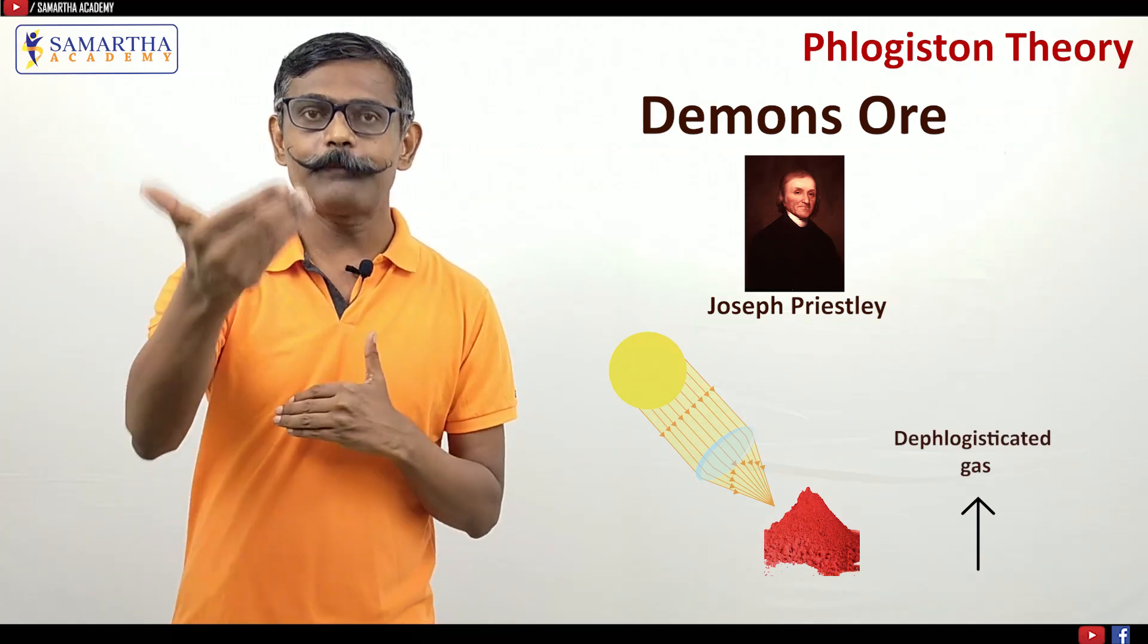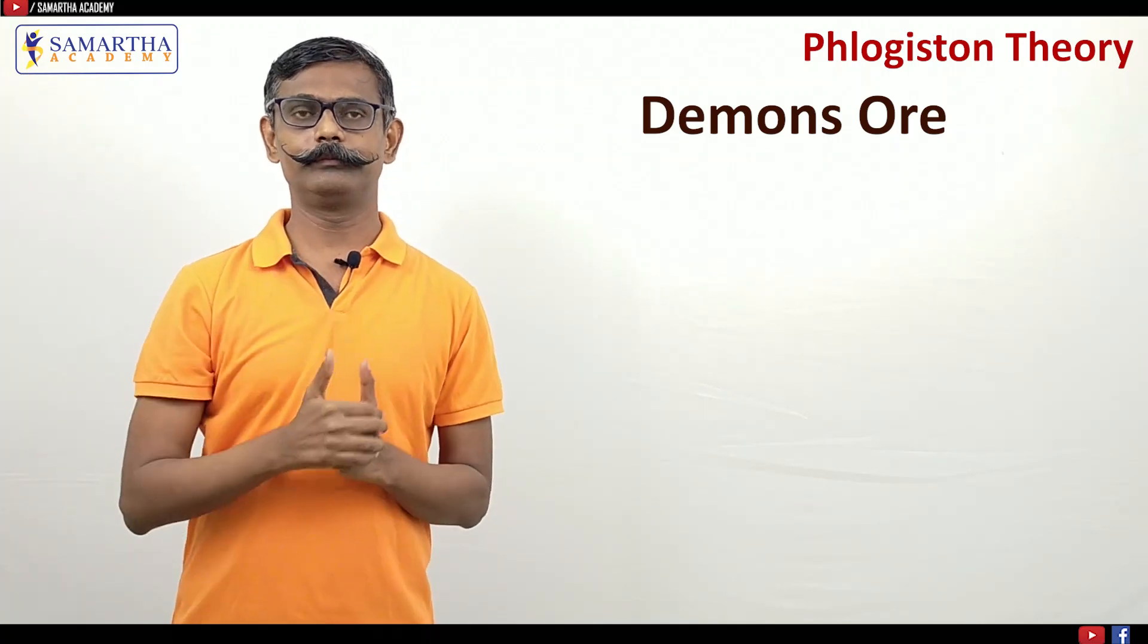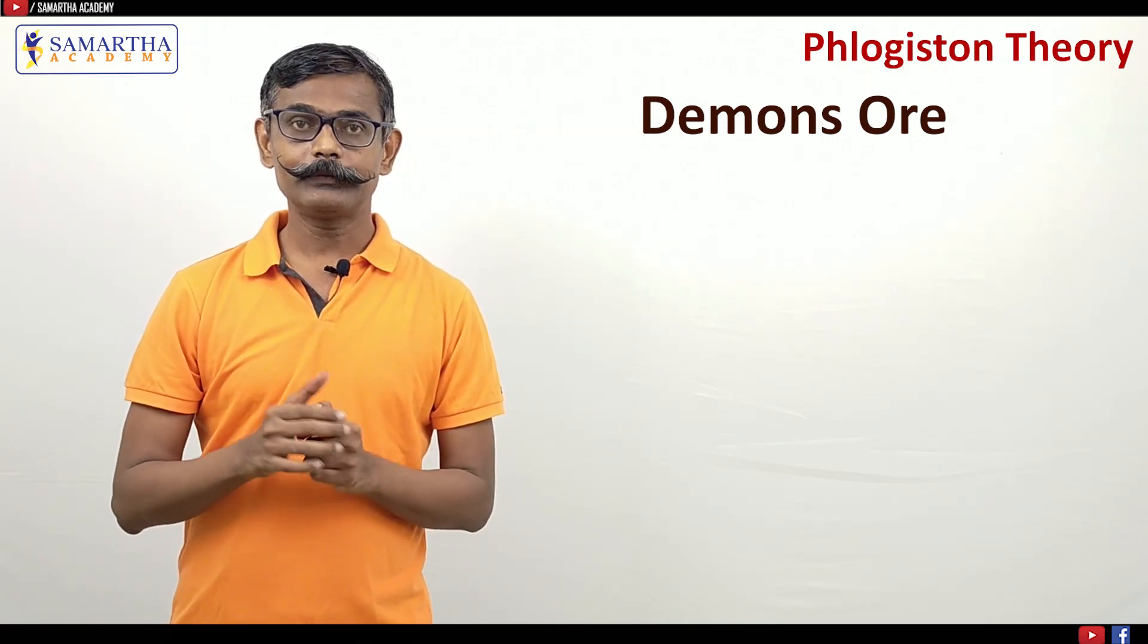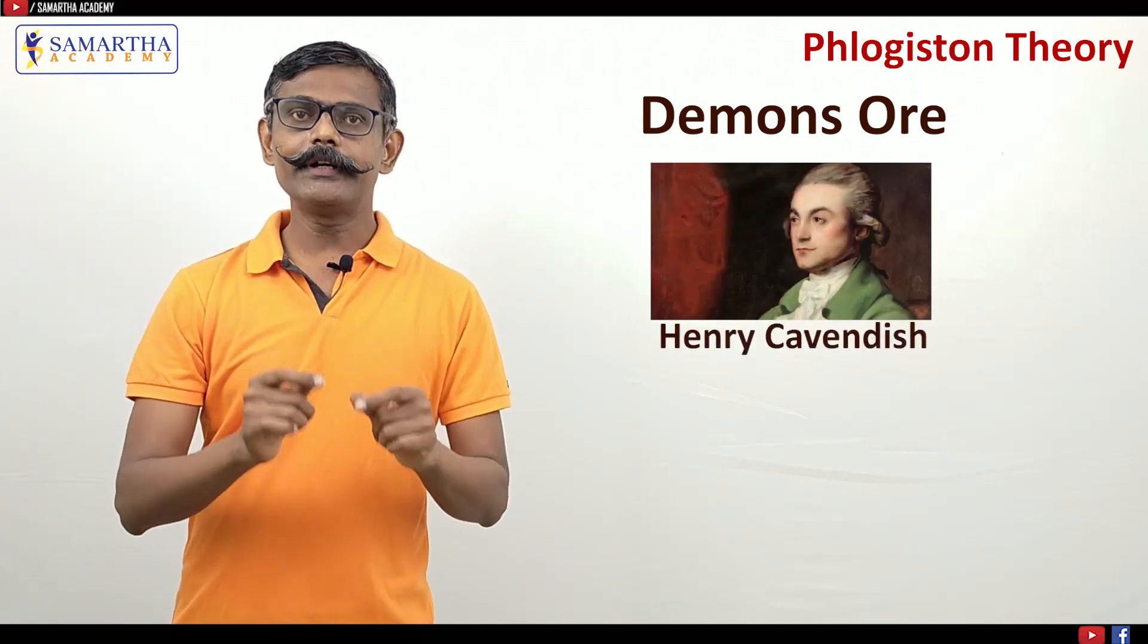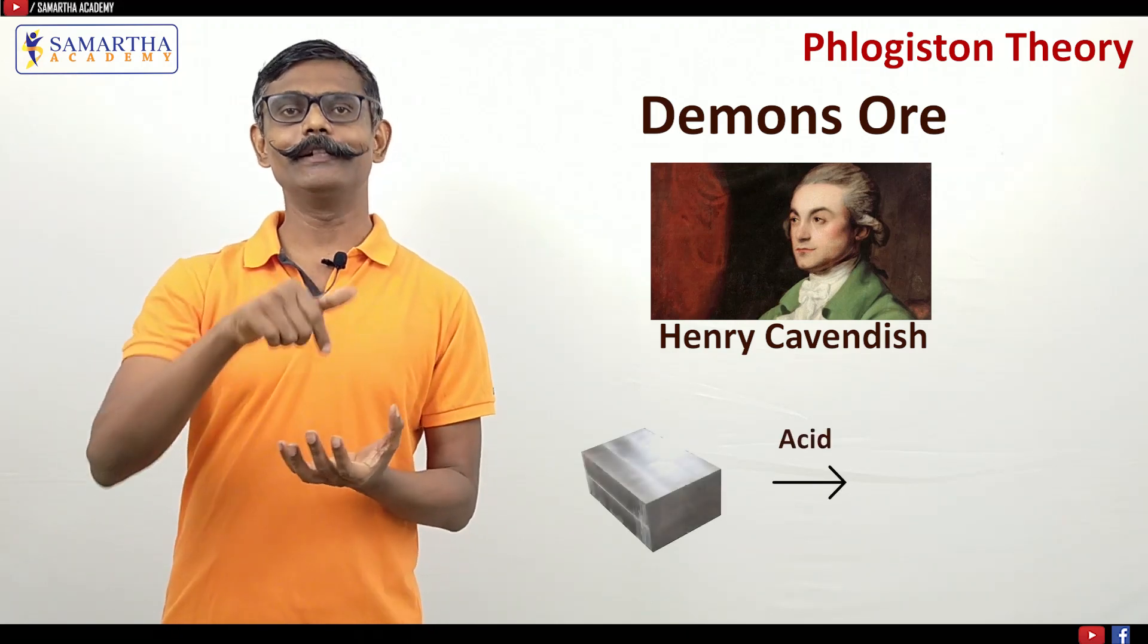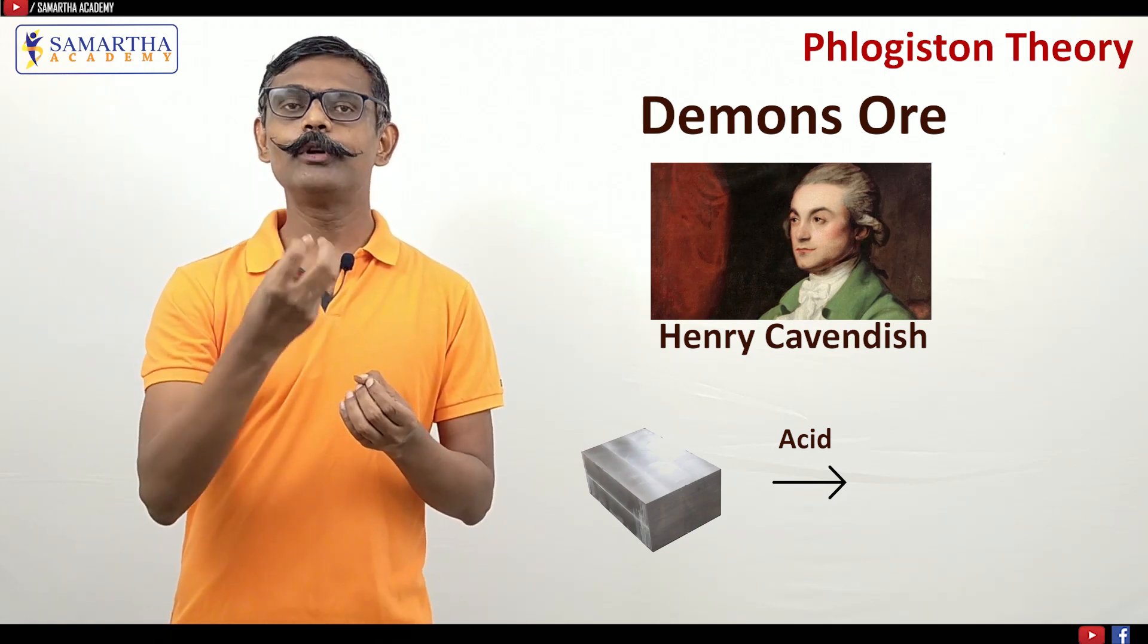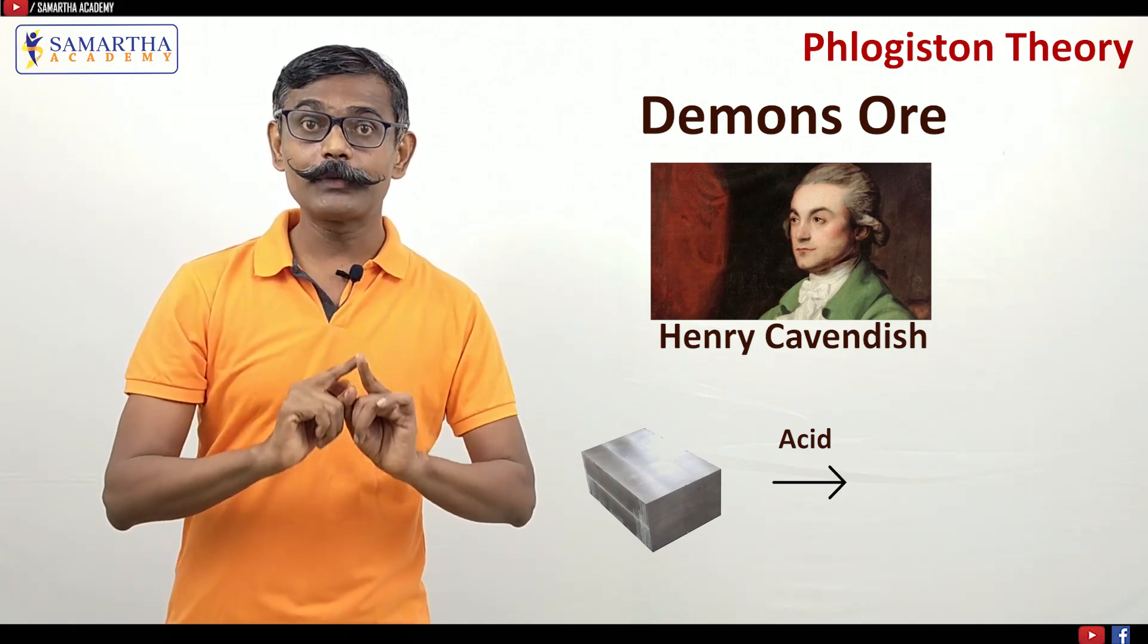What is that dephlogisticated gas we will see later on. Fifth interesting example that took place in the 18th century is of Henry Cavendish. In 1766, when he treated metal with acid, he noted bubbles, he noted evolution of the gas. He thought it is a gas coming from the metal.